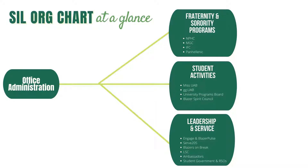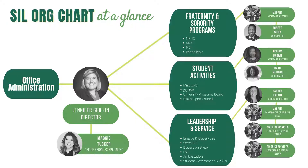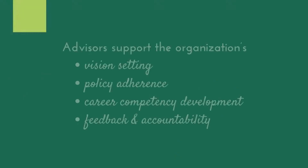SIL is composed of three functional areas: fraternity and sorority programs, student activities, and leadership and service. Within each of these areas, professional staff support your ongoing development through the advising of student organizations, programming, and student employment.